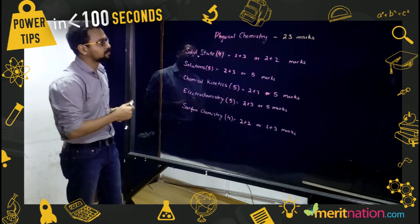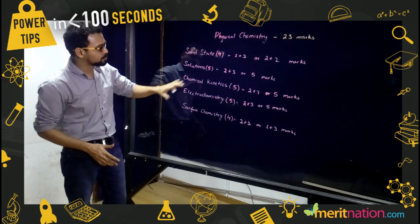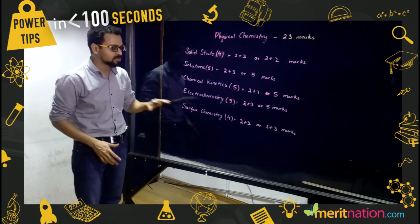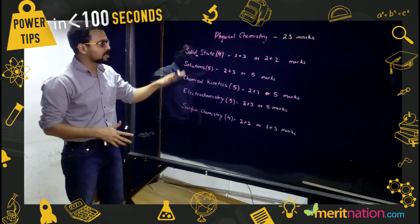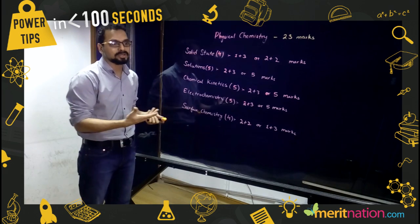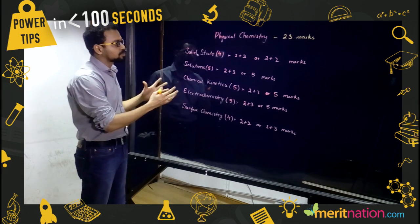The marks are distributed across chapters that accommodate physical chemistry: solid-state, solutions, chemical kinetics, electrochemistry, and surface chemistry. One of the best parts about physical chemistry is that they are basically numerical oriented, so you can think of scoring the exact 23 marks completely.